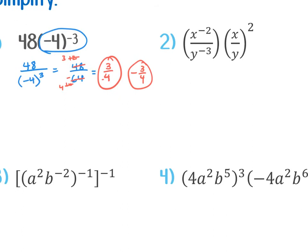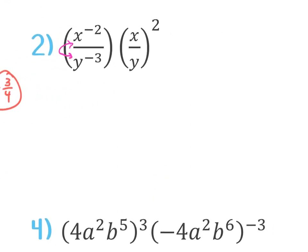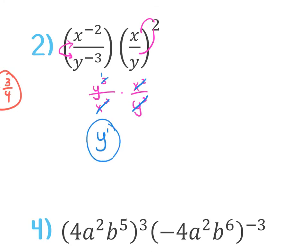Number two — you've got exponents on the outside of the parentheses, so that's what you want to take care of first. I can actually switch these while I'm in here and say this would be y to the third over x to the second, because they're both negative. And then on the right, I want to distribute that in, so it's x squared over y squared. When you're multiplying, we multiply straight across. You can cross-cancel: x squared and x squared cancel out, and y squared cancels with two of the y's on top, leaving you with just y to the first.